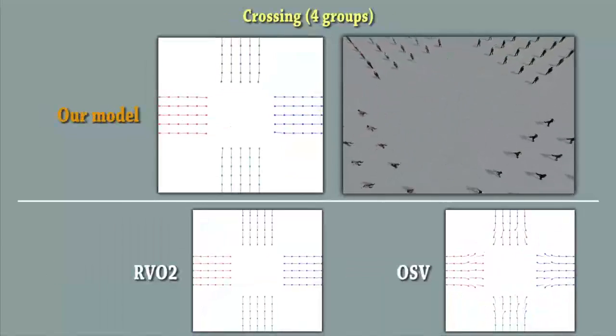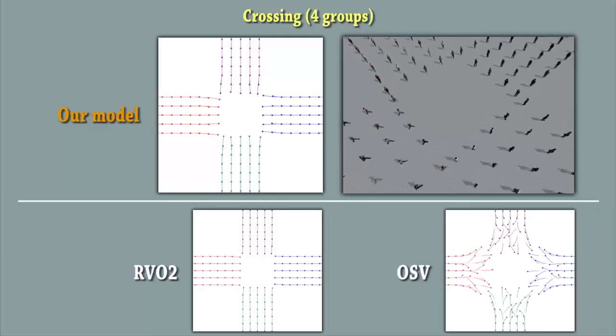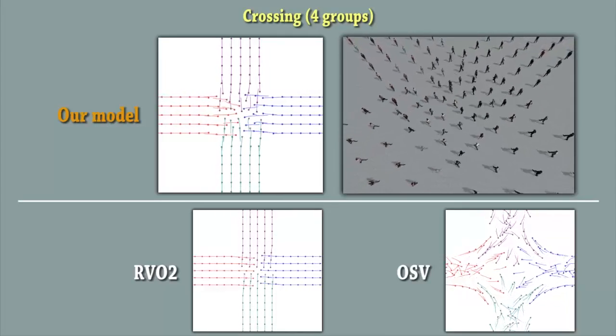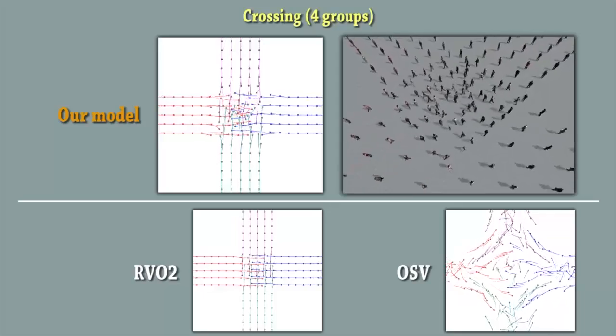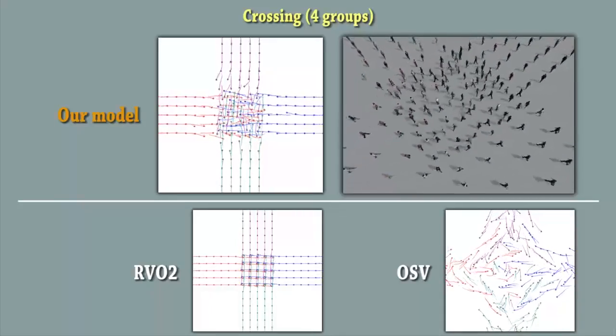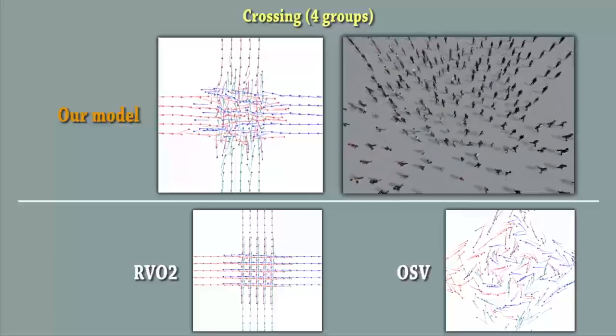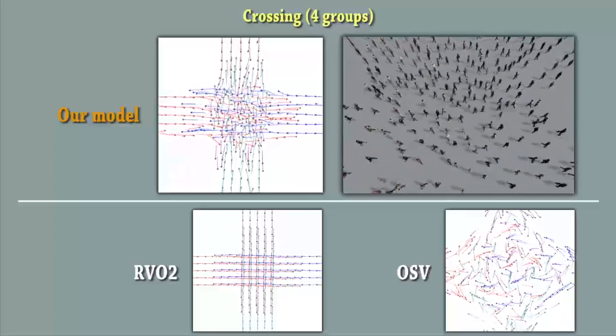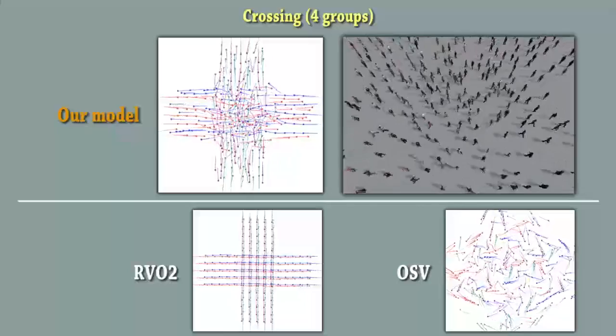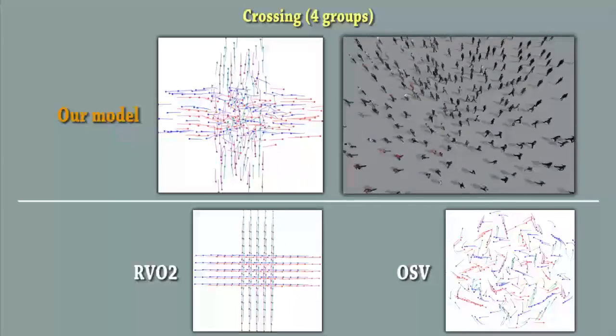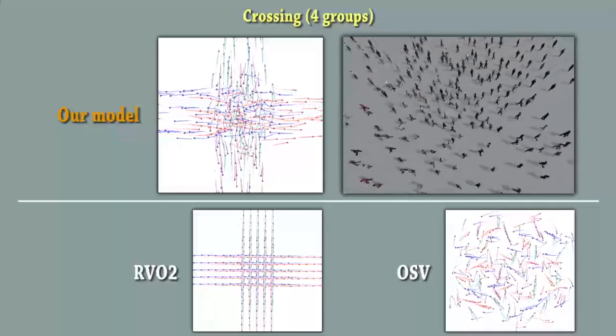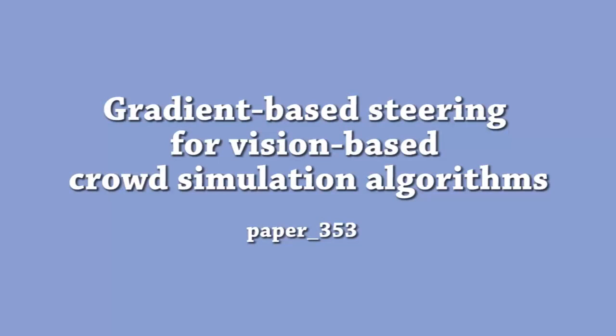Here, four groups of agents want to switch positions. It's interesting to see that, for our model, agents are able to keep a natural global flow towards the goal, even when the density increases. RVO produces visually unpleasant geometrical patterns which appear quite unnatural. OSV ends up with interesting grouping of agents, but way too large avoidance distances, also quite unnatural. Thank you.